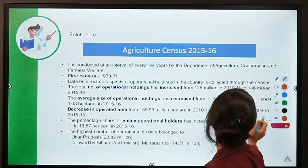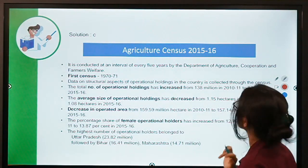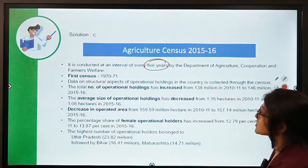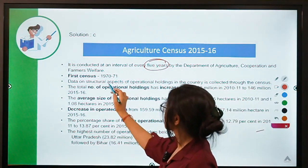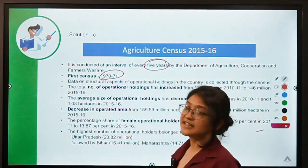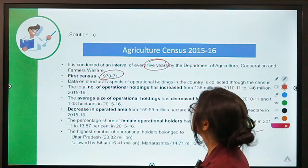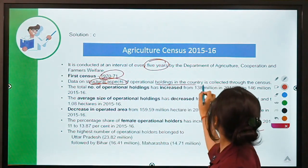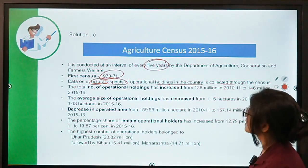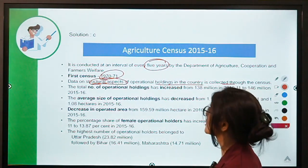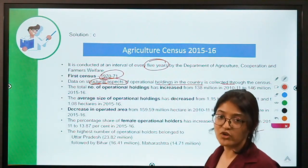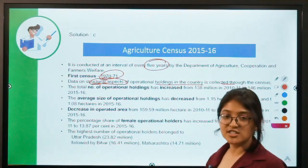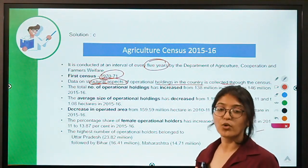The Agriculture Census is conducted at an interval of five years by the Department of Agriculture, Cooperation and Farmers Welfare. The first census was conducted in 1970-71. Data on structural aspects of operational holdings in the country is collected through this census — including the number of operational holdings, the size of operational holdings, and the structure of agricultural holdings.